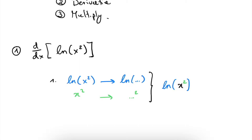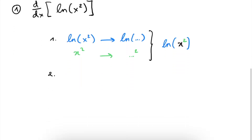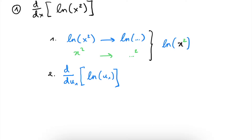The second step is to take the derivative of each of these functions separately. The derivative of ln(u1) — and u1 is just a placeholder, it could be x, but that might be confusing with the x we already had, so we just use a placeholder — this is just 1 over u1. And in our case, we see that u1, the thing inside of the logarithm, is just x². So we rewrite our solution as 1 over x².